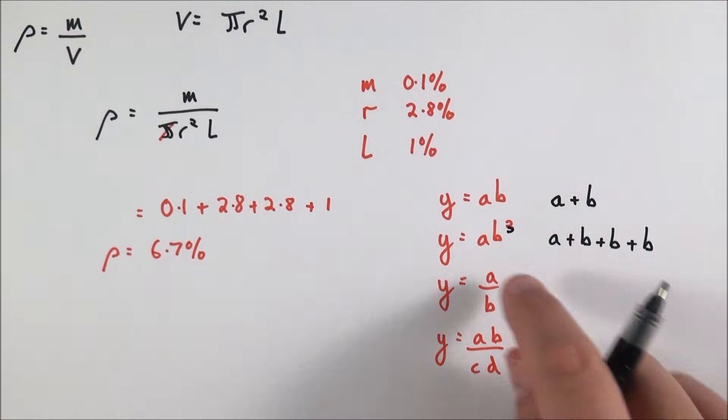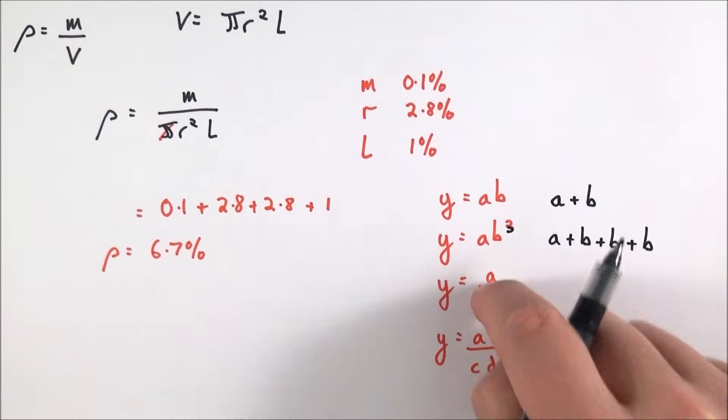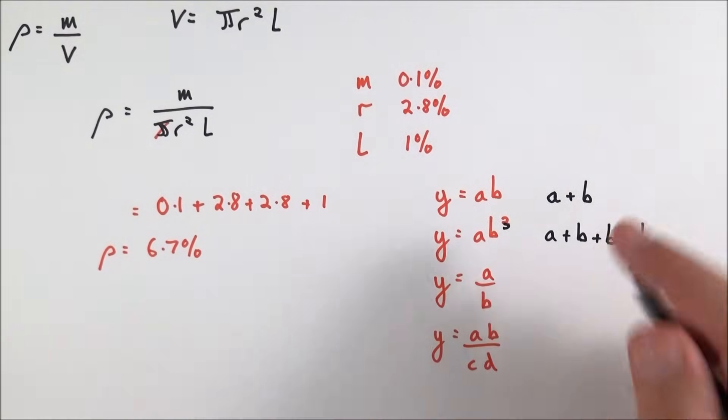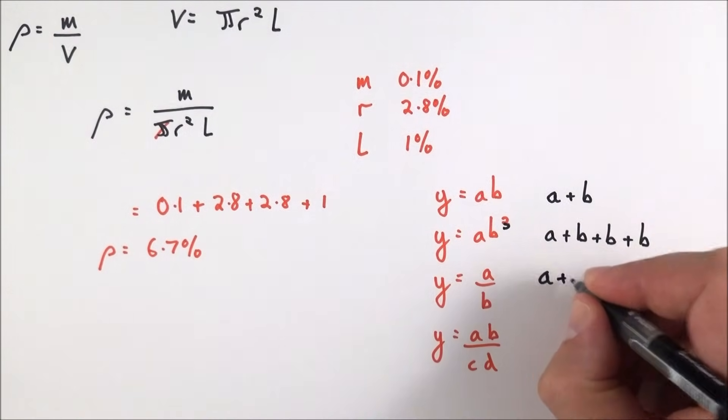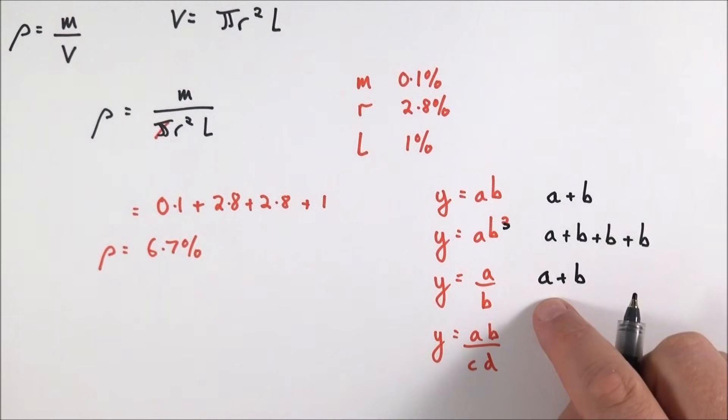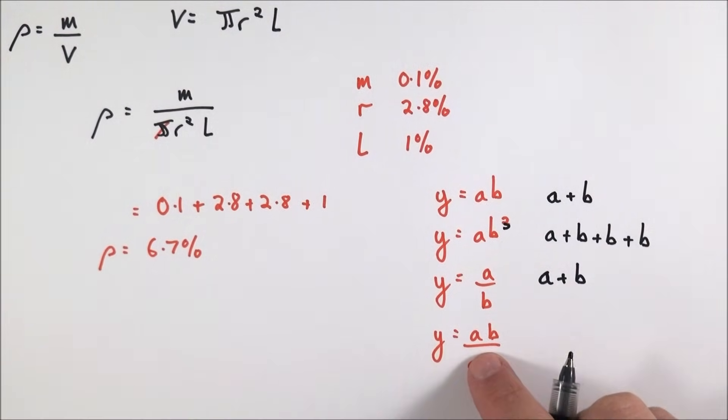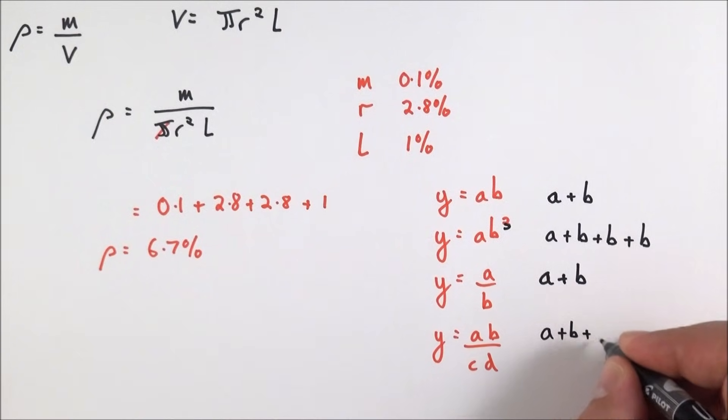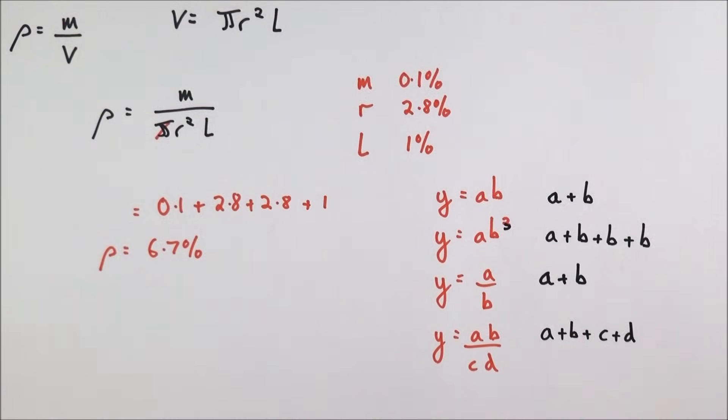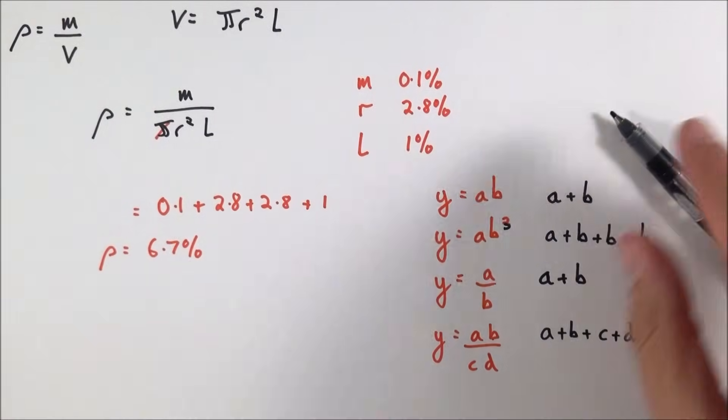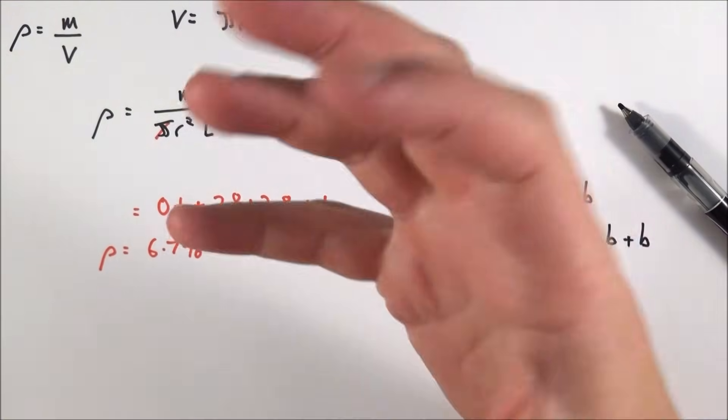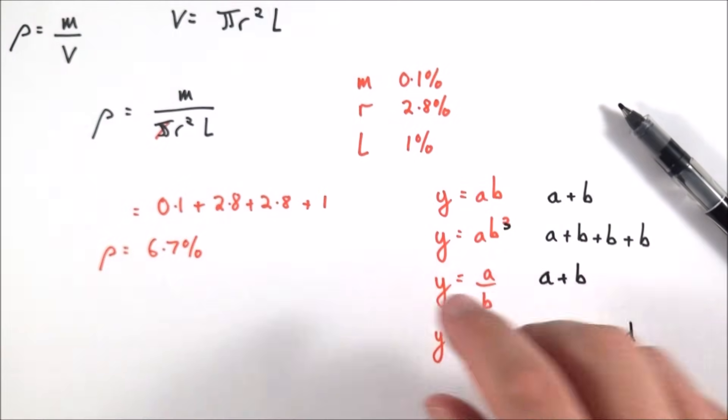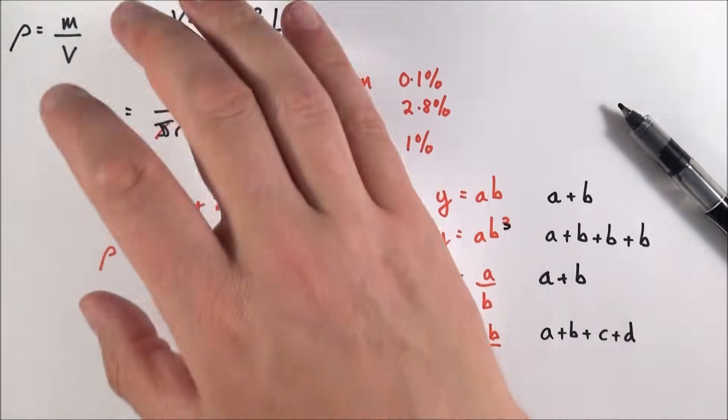It doesn't matter if you're multiplying things together or dividing. Because you're dividing doesn't make the uncertainty less. For y equal to a over b, it's equal to a plus b, so just adding those percentage uncertainties together. And again for y equal to a over b times c times d, okay. Now this is not perfect, it is not exact, but what we're doing is just trying to quantify how much uncertainty there might be in a final answer.